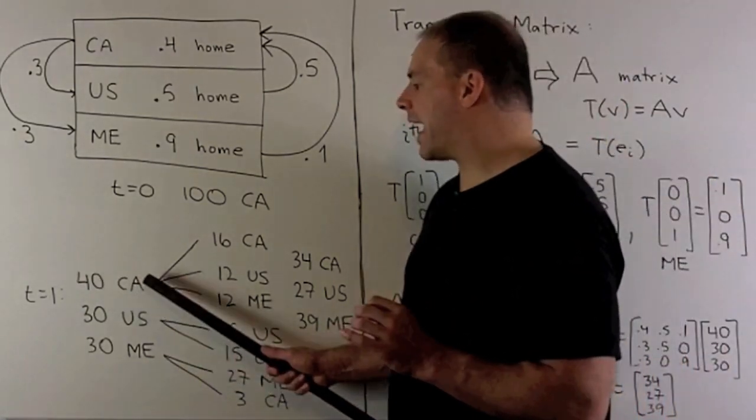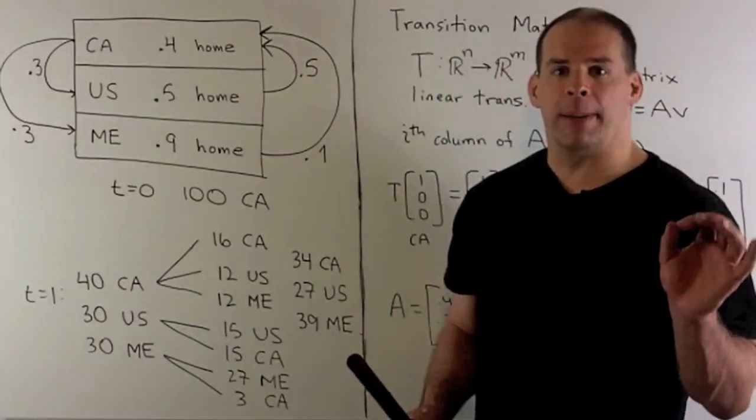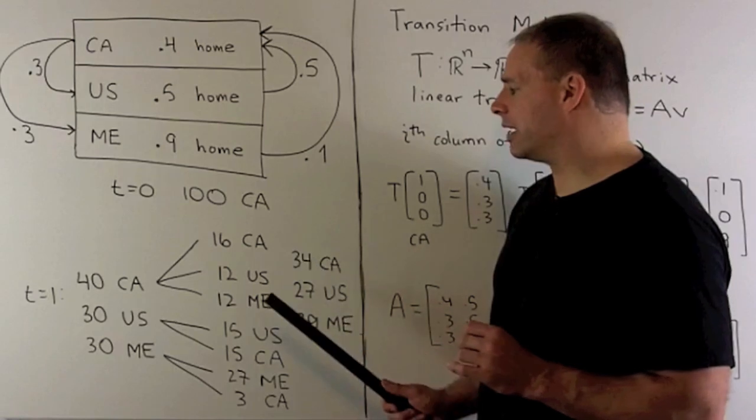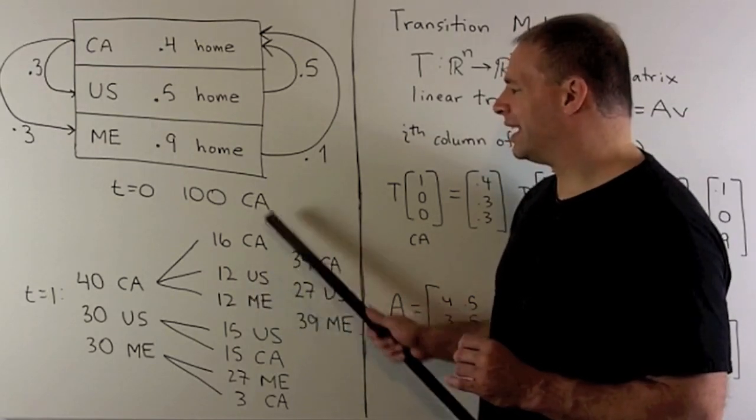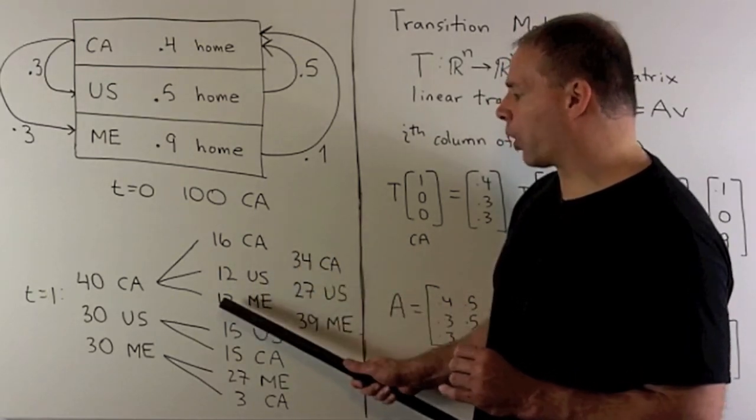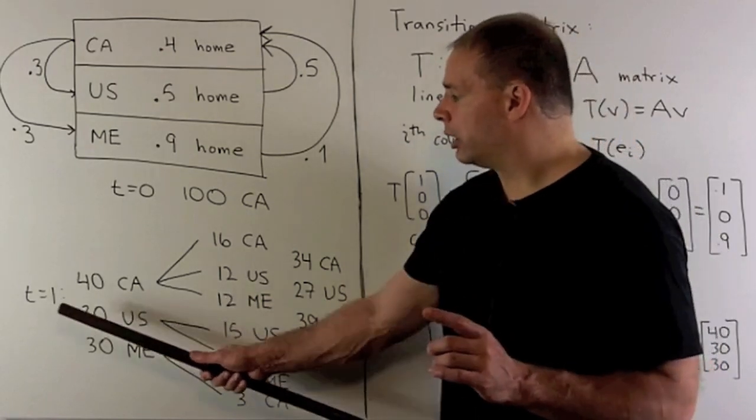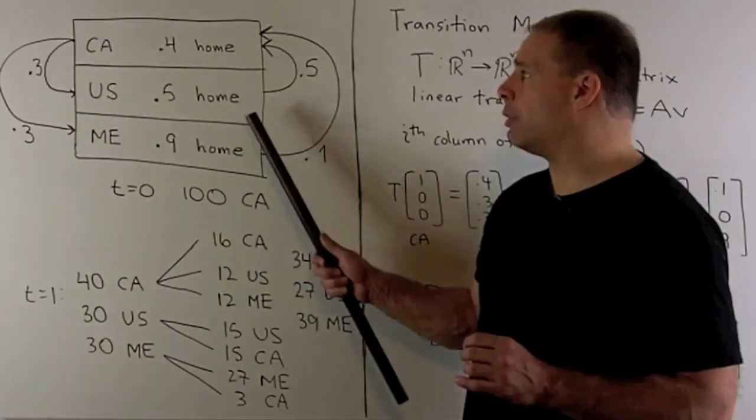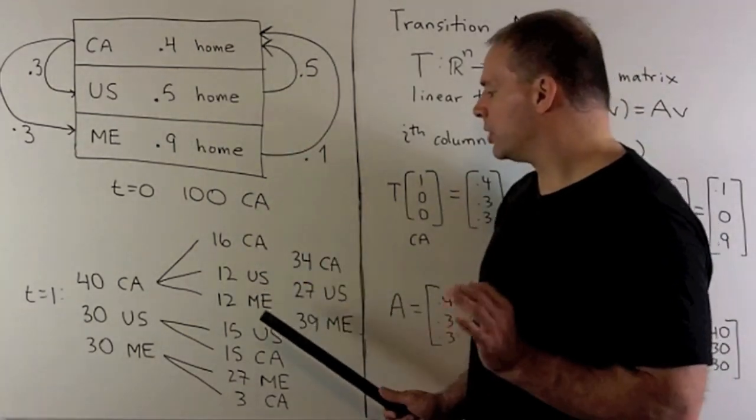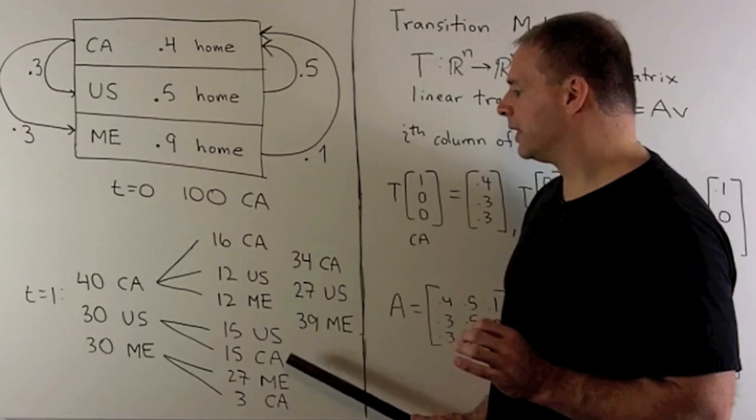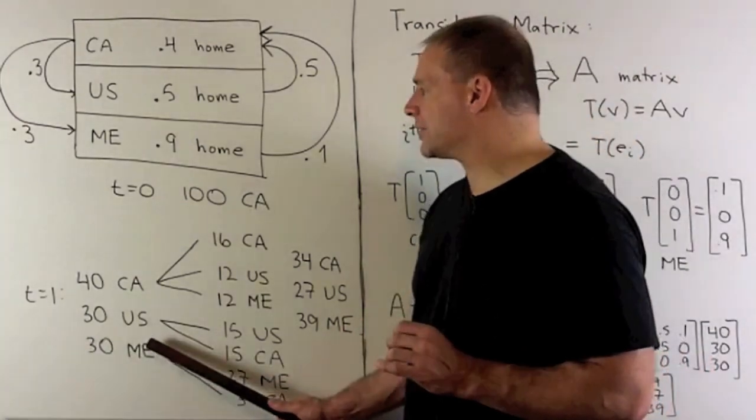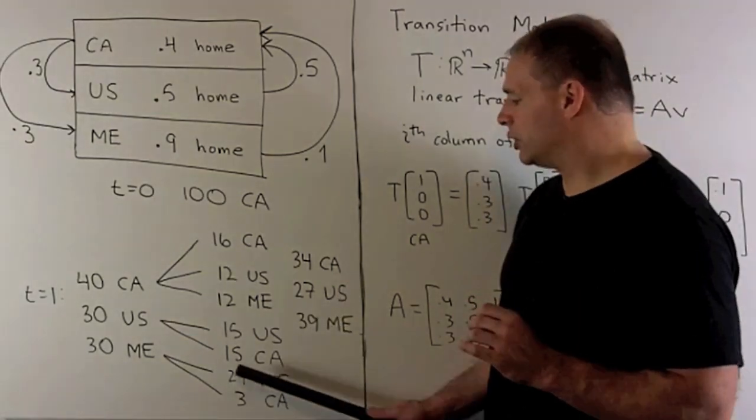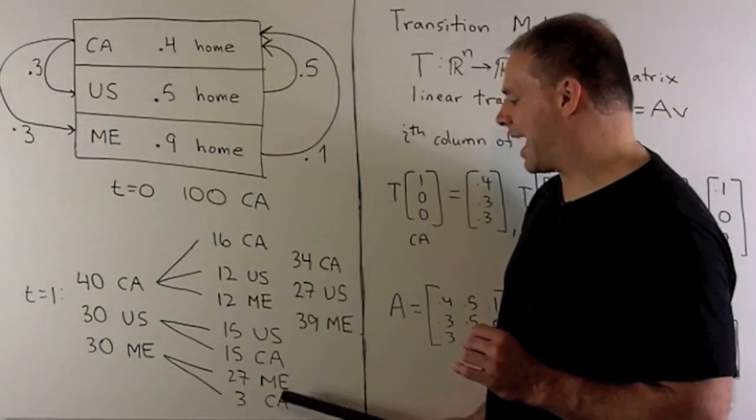If I let another year go by, then for this 40 in Canada, we split up by 40, 30, and 30%, which gives me 16 in Canada, 12 in the US, 12 in Mexico. For the 30 in the US, we split up into 50 and 50, half stay at home, half go to Canada. So, we have 15 in the US, 15 in Canada. Finally, for the 30 in Mexico, we split it up as 90 and 10%. So, we'll have 27 in Mexico, 3 in Canada.